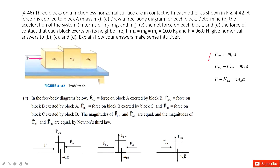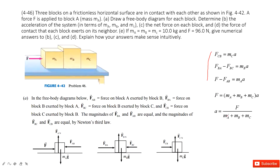From Newton's second law, we write these three equations. Can you find the acceleration for the system? We have three equations, and we can add them together. On the left side, you can see the internal force terms cancel with each other. So the only term left is F. Adding the right-hand sides gives the total mass times acceleration. In this way, we can find the acceleration for the whole system.